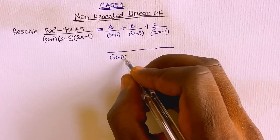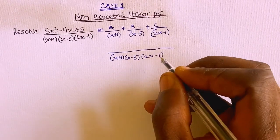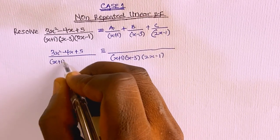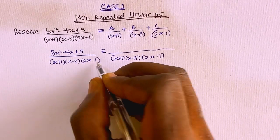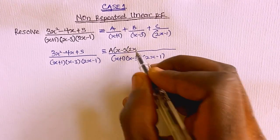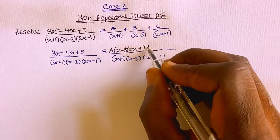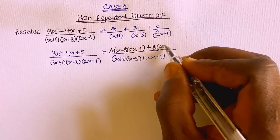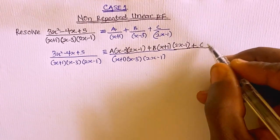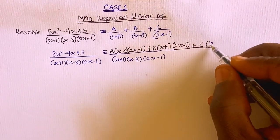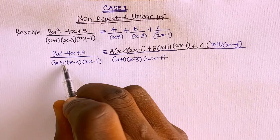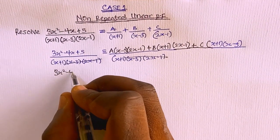Multiplying both sides, we get (x+1)(x−3)(2x−1) on the left, which is equivalent to (3x²−4x+5) divided by (x+1)(x−3)(2x−1). The common factors cancel out, leaving A(x−3)(2x−1) plus B(x+1)(2x−1) plus C(x+1)(x−3).